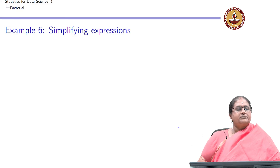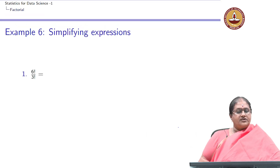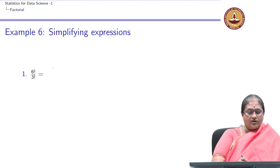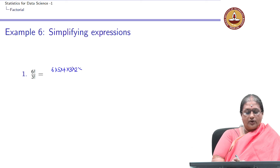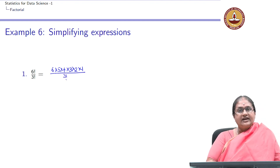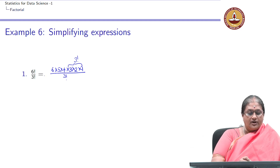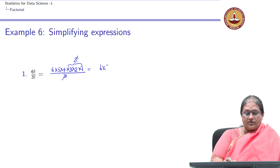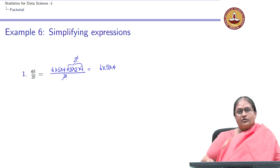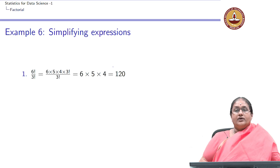Now let us look at further simplification of factorial notation. What is 6!/3!? We know 6! = 6 × 5 × 4 × 3 × 2 × 1. Recognizing that 3 × 2 × 1 = 3!, we can cancel the 3! in numerator and denominator, giving us 6!/3! = 6 × 5 × 4 = 120.